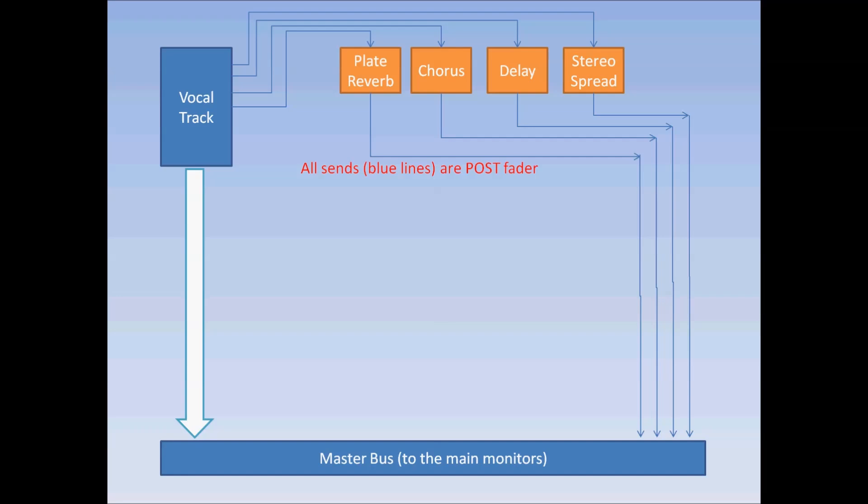So where we are so far is I have a vocal track that goes down to a master bus if I inserted it into a new project. I have four parallel sends that are set up. They come off postfader, and they're also going down to the master bus.